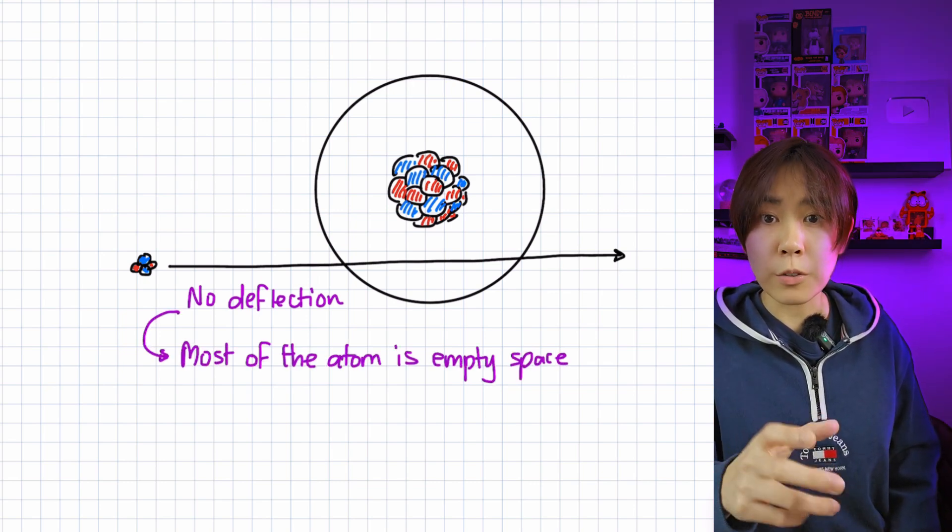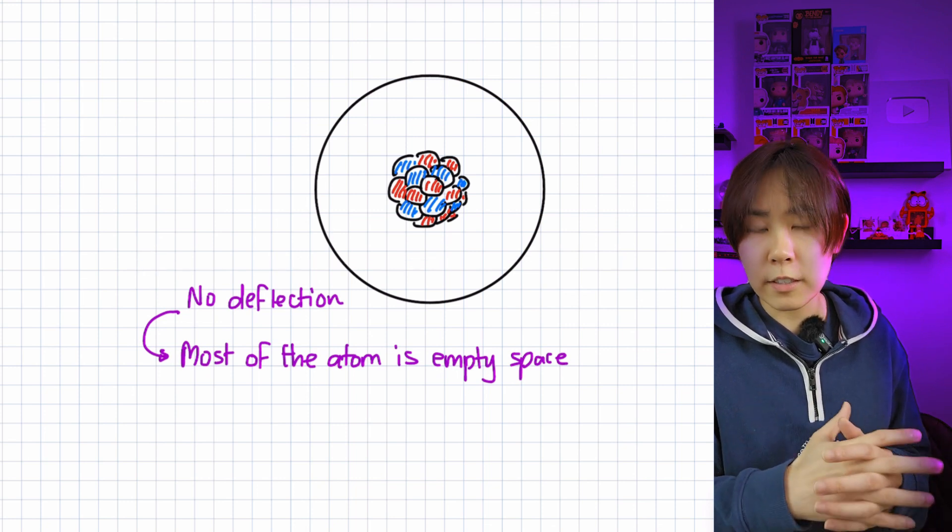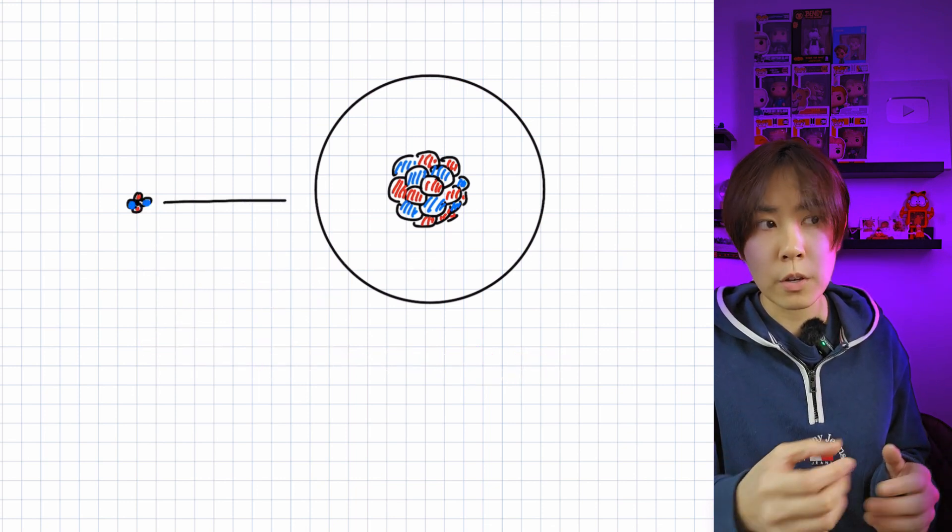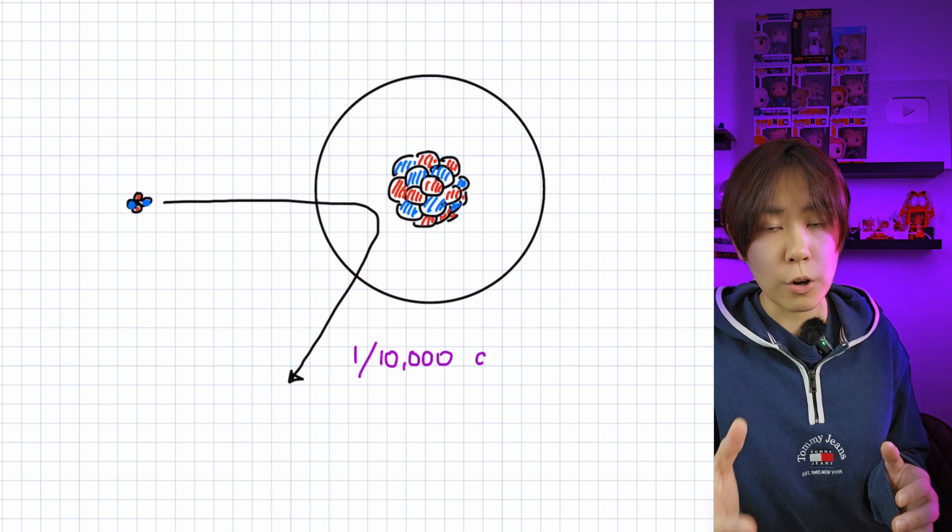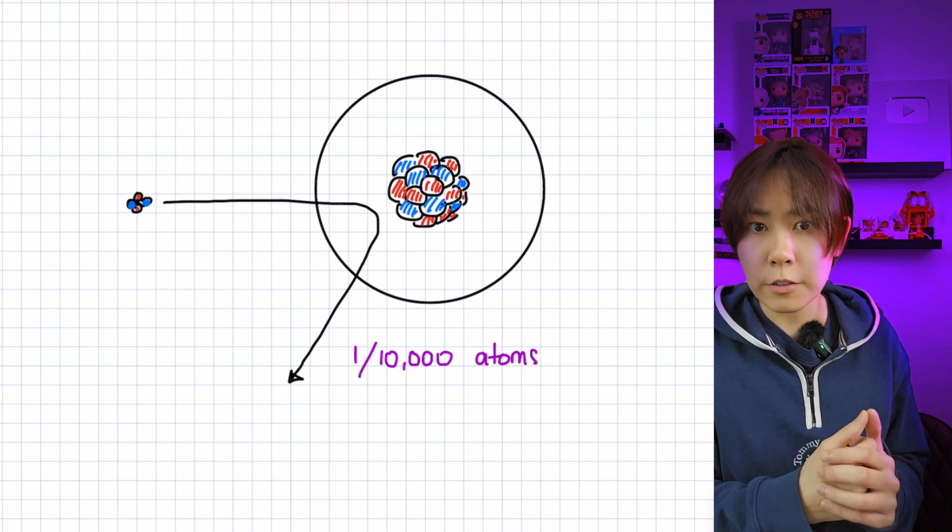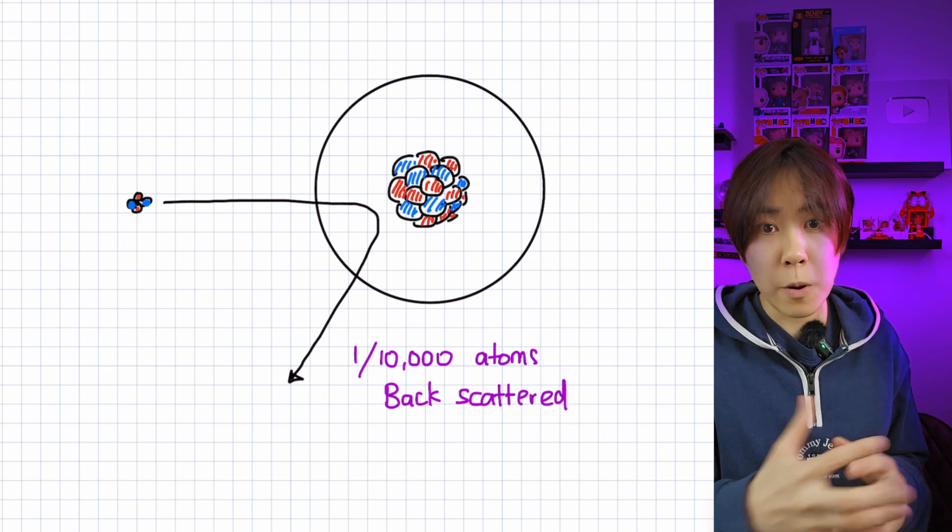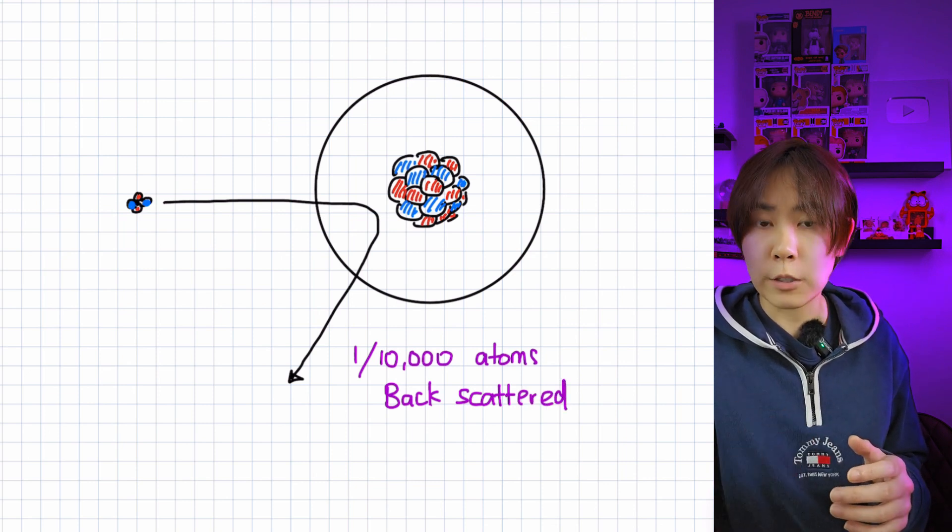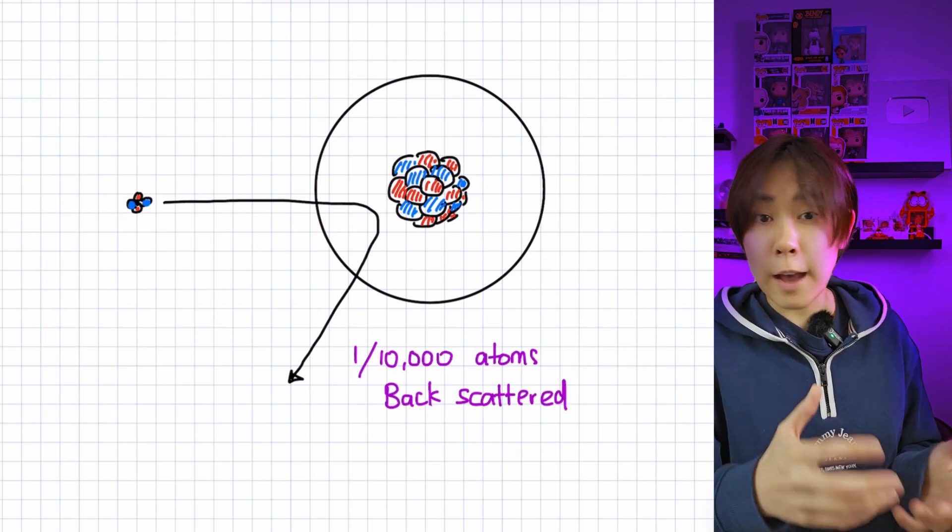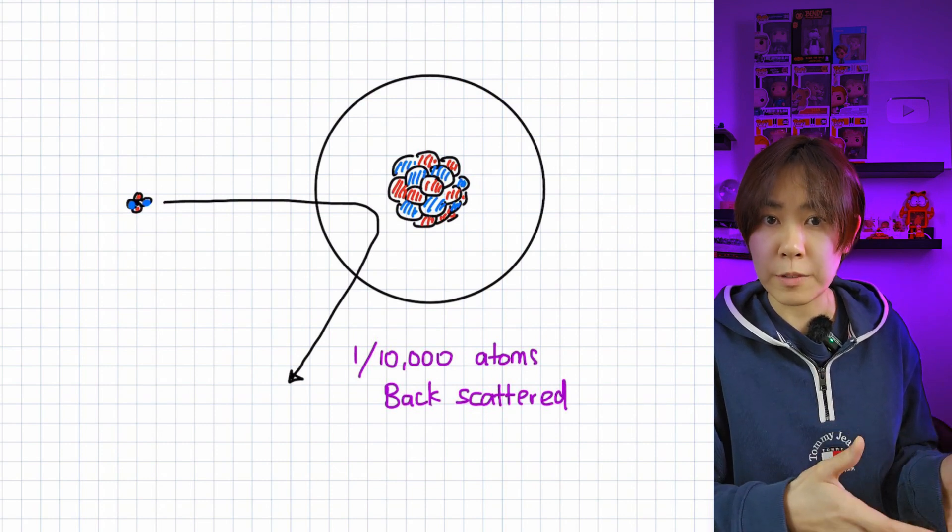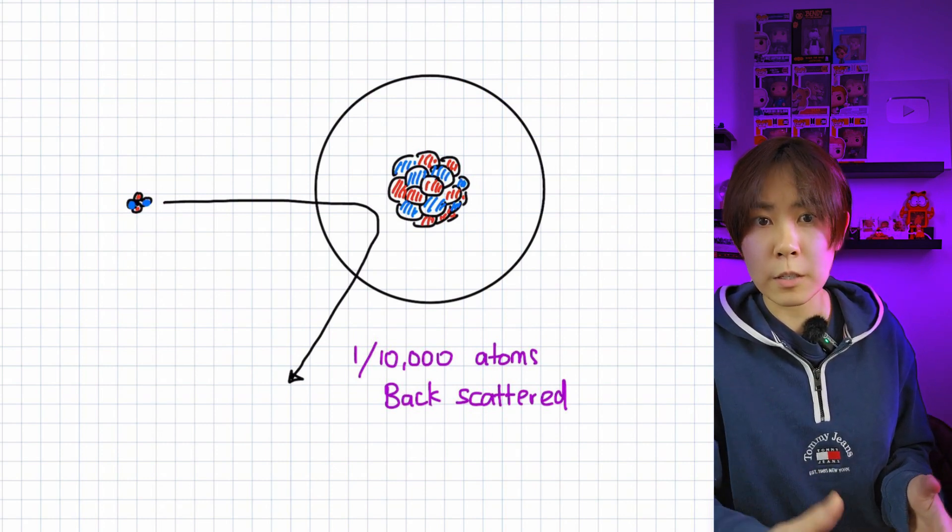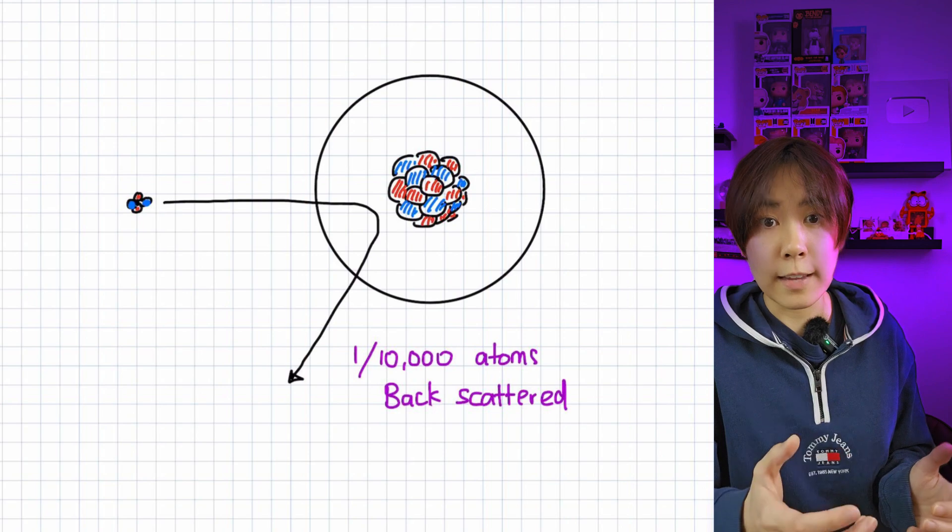But Rutherford also saw that 1 in 10,000 alpha particles were deflected at a large angle more than 90 degrees. We call this backscattering, which occurs if the alpha particles travel directly towards the nucleus. How did Rutherford then utilize his observations from the scattering experiments to calculate the size of the nucleus?